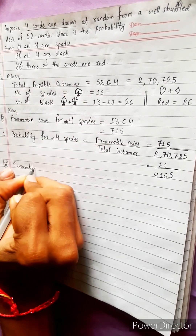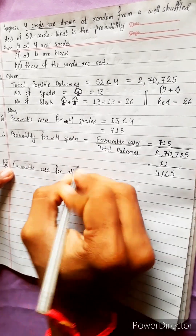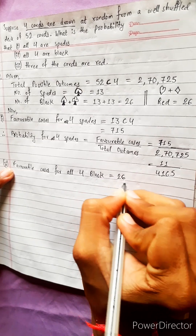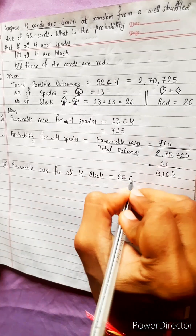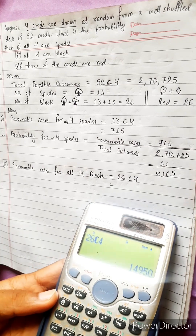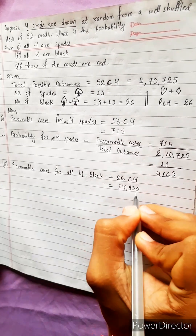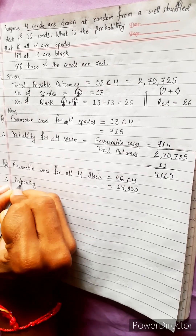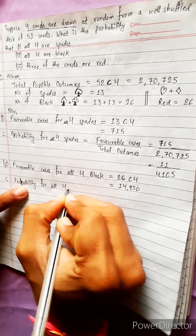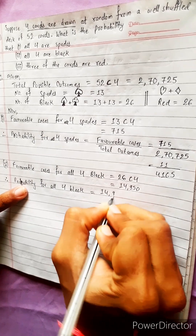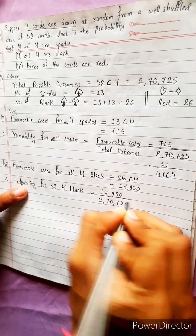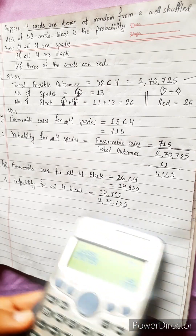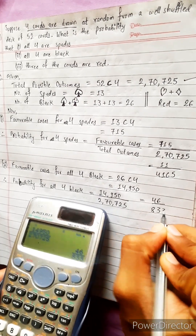For all 4 black cards: there are 26 black cards total and we need 4, so 26C4 = 14,950. Therefore, probability equals 14,950 divided by 2,70,725, which simplifies to 46 by 833.